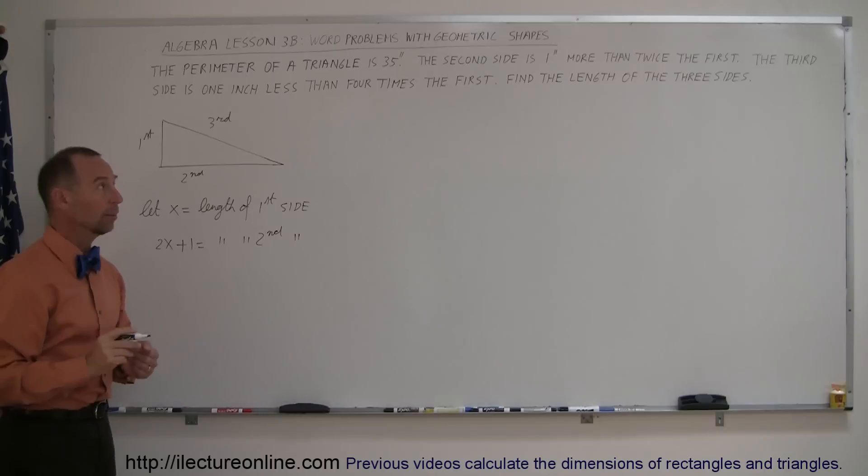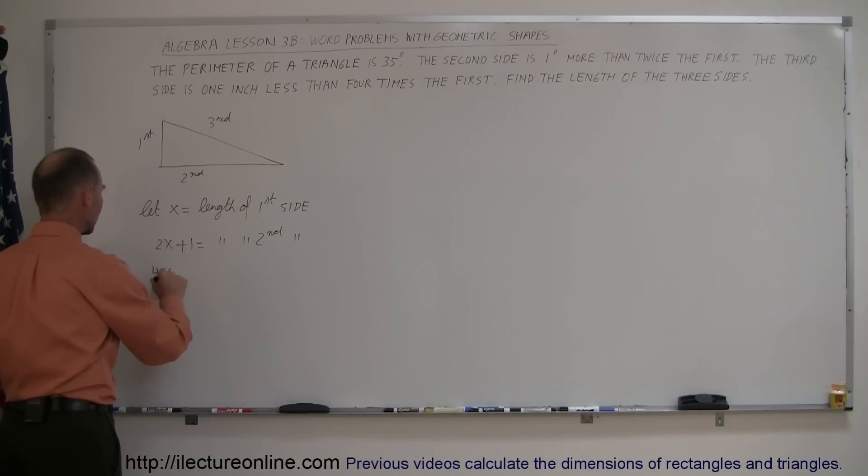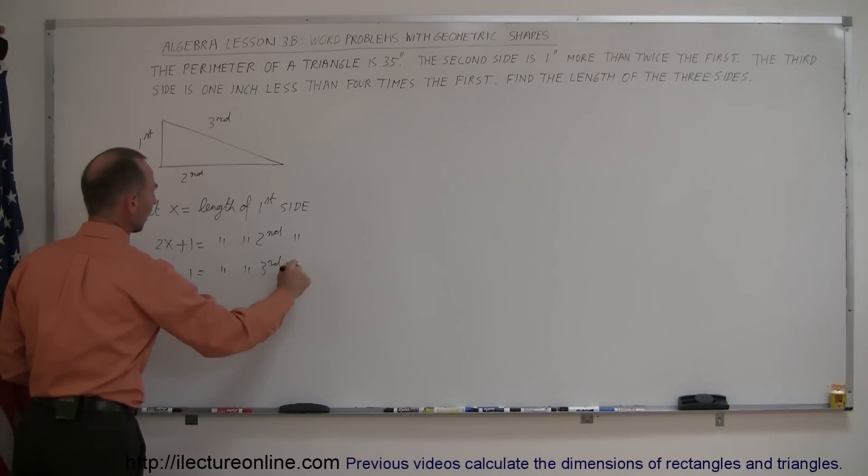Now the third side, it is one inch less than four times the first. So 4 times x, that would be four times the first, and then one inch less, we subtract one from that. So that equals the length of the third side.